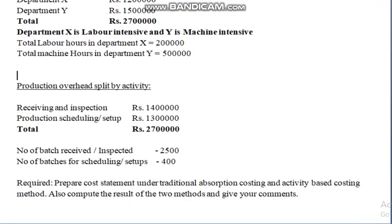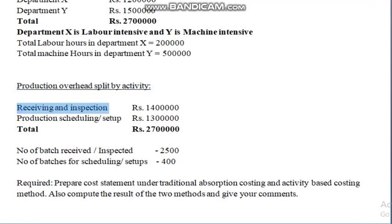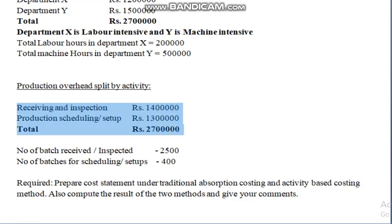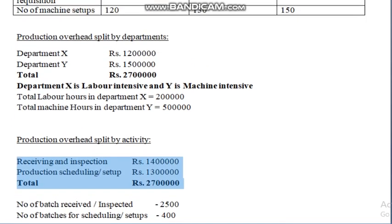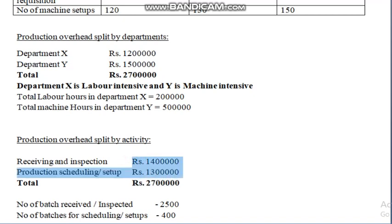Production overhead split by activity relates to activity-based costing. The company has identified two activities: receiving and inspection activity at 14 lakh rupees, and production scheduling or setup activity at 13 lakh rupees — totaling 27 lakh rupees. Here the 27 lakh is absorbed by activities, unlike the traditional method where it was absorbed department-wise.